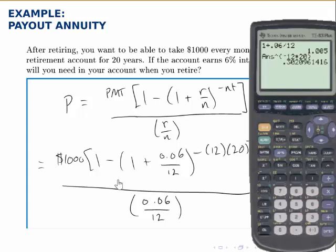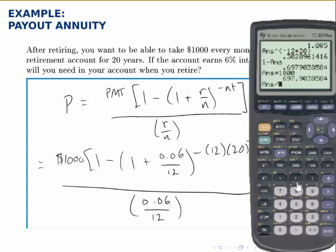That represents everything after the minus sign in the brackets, so I need 1 minus that answer. So 1 minus, I'm going to use the answer key to get that. So that represents everything in brackets, and then I multiply this by a thousand to get the entire numerator, and then divide by, again using parentheses, 0.06 divided by 12.